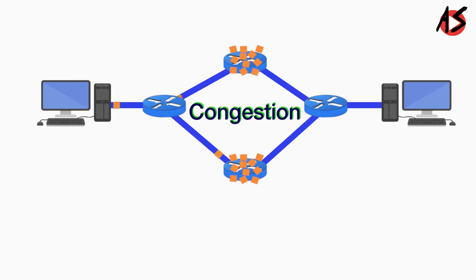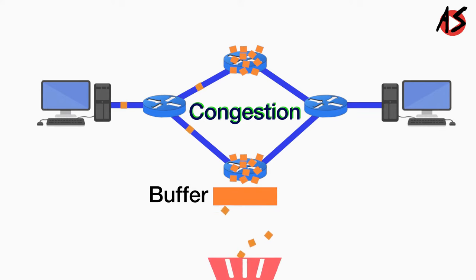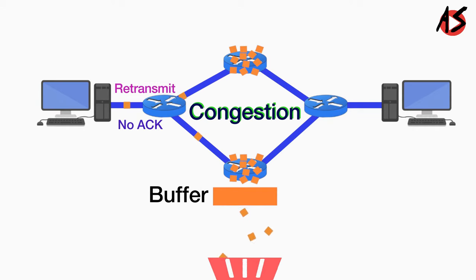Normally, congestion occurs because routers have a finite buffer capacity to store packets. When more packets arrive and the router reaches its buffer capacity, it simply starts to drop packets. When the sender TCP is not getting acknowledgments, it retransmits the segments, which leads to more congestion.